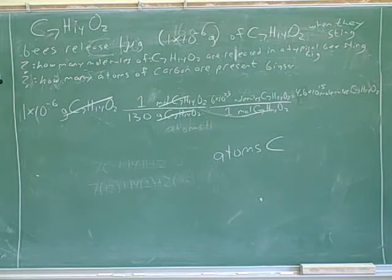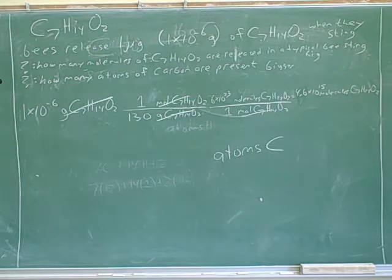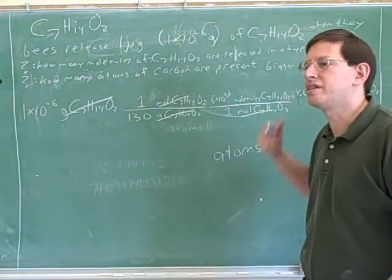So the question was, how many atoms of carbon are present? But we have to fill in on that a little bit. They mean how many atoms of carbon are present in what? Now, actually, well, what was the first question? How many molecules of C7H14O2 are released? Released in what? Bee sting germ. How many atoms of carbon are released in a typical bee sting? Right. So that's what the second question is about, too. The second question is asking how many atoms of carbon are present in a typical bee sting.